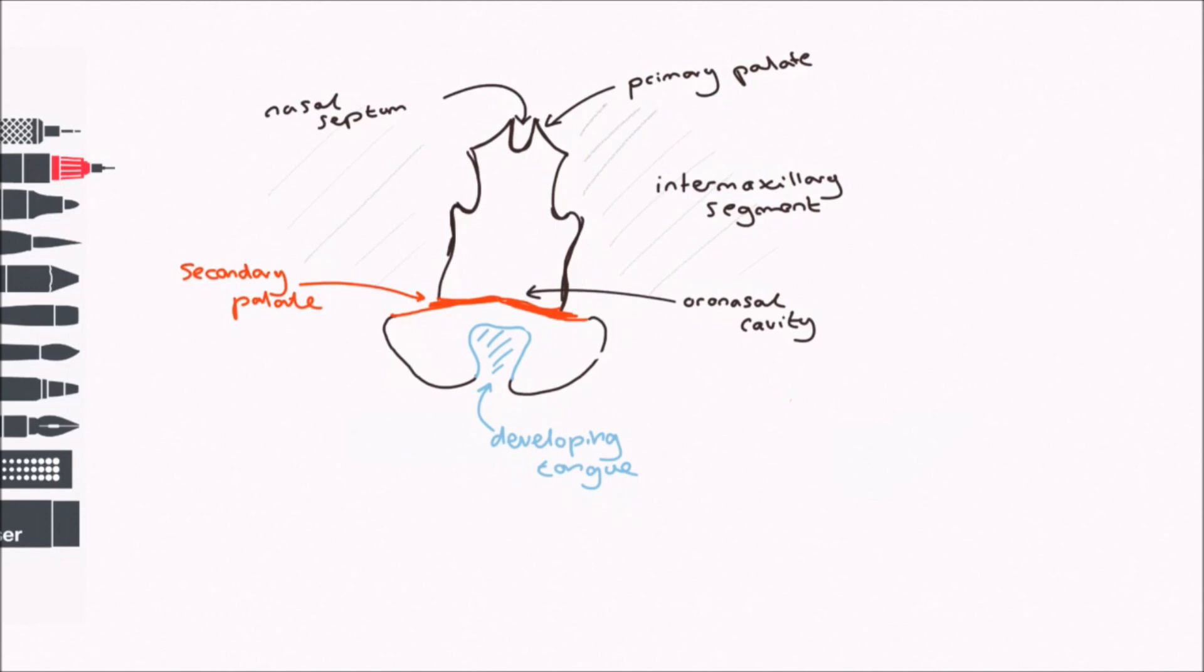So to recap, the primary palate forms the top and lateral walls of the nasal cavity. And the secondary palate forms the roof of the mouth, separating the oral cavity from the nasal cavity. The nasal septum grows inferiorly from the primary palate to fuse with the secondary palate, dividing the space of the nasal cavity in two.